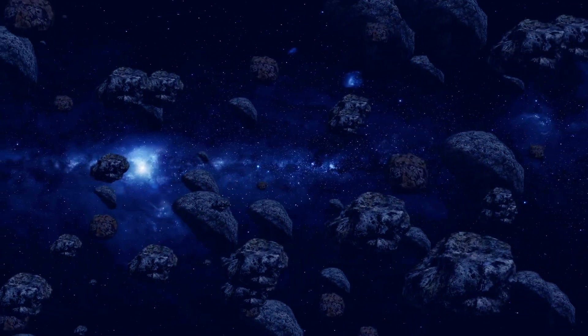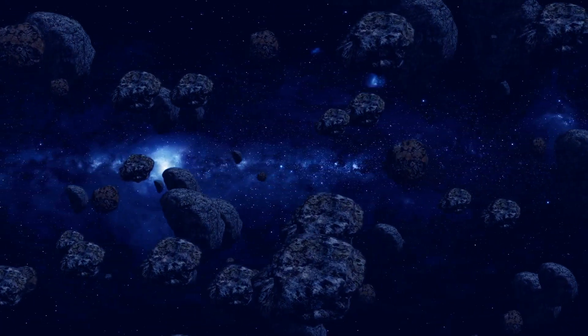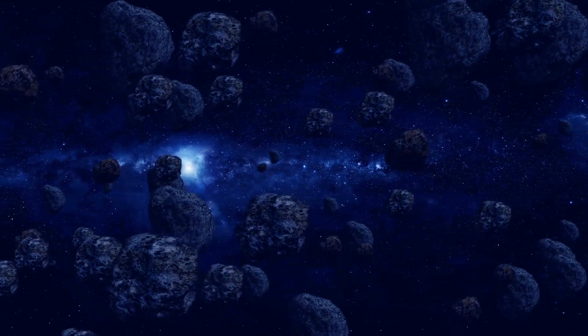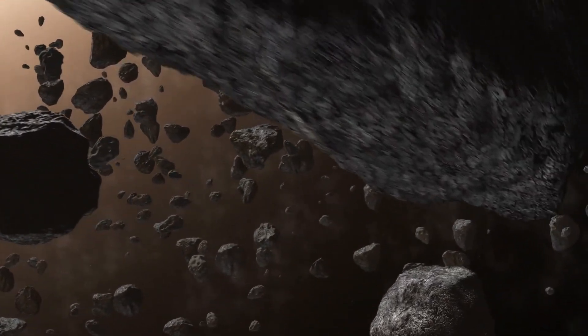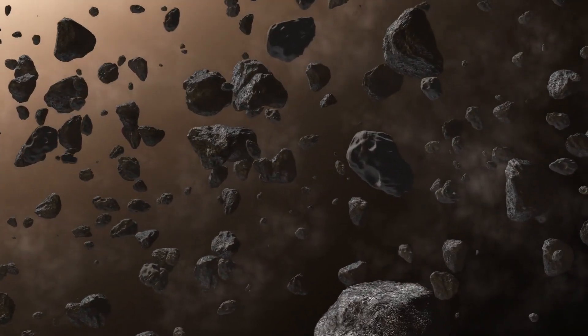Imagine a place in our solar system, between the orbits of Mars and Jupiter, filled with rocky objects floating in space. This is the asteroid belt, an enigmatic region that has puzzled scientists for centuries.